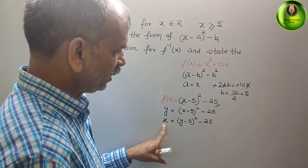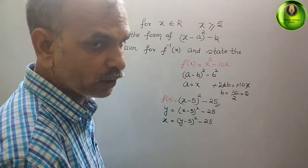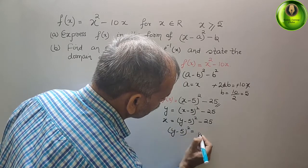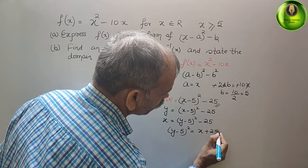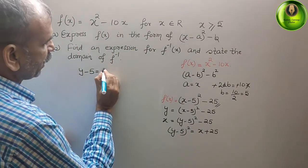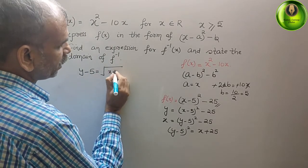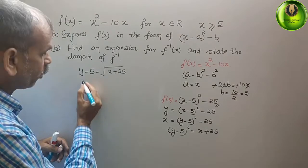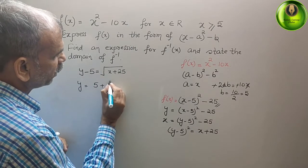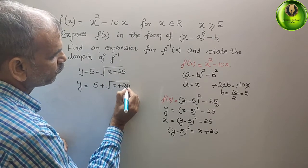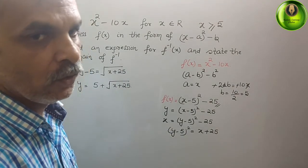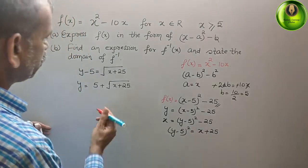Bring the 25 to this side. It will be (y minus 5)² = x plus 25. So y minus 5 is equal to root over (x plus 25). Therefore y = 5 plus root over (x plus 25). This, after the replacement, is your f inverse of x.